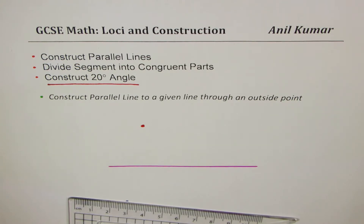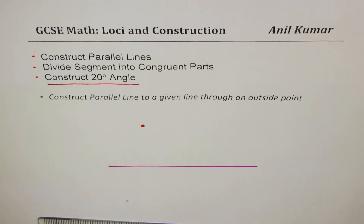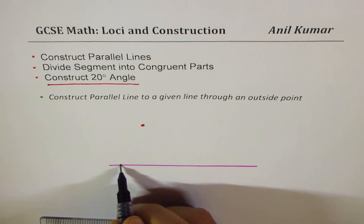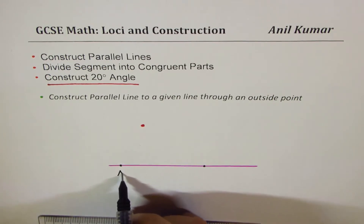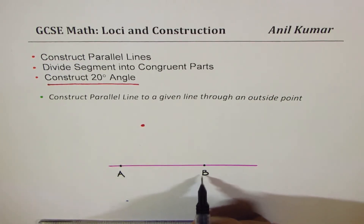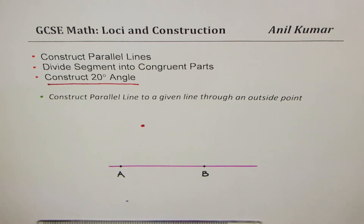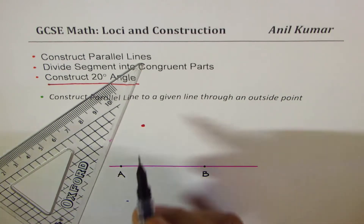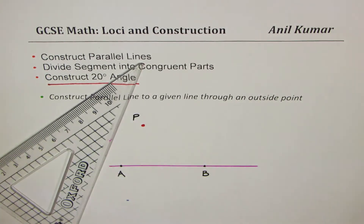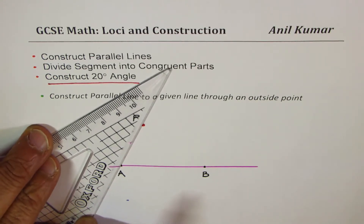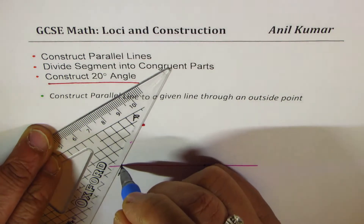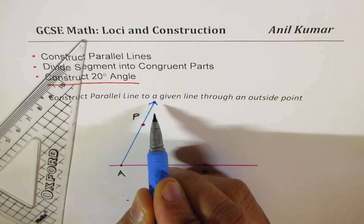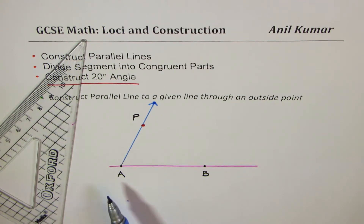To construct a parallel line, a line is defined by two points, so we can take two points on the line — let's say points A and B. From point A, let us connect the exterior point. Let's call this exterior point as point P, so that will be a unique line. The ray PA connects point A on the given line with our exterior point P.